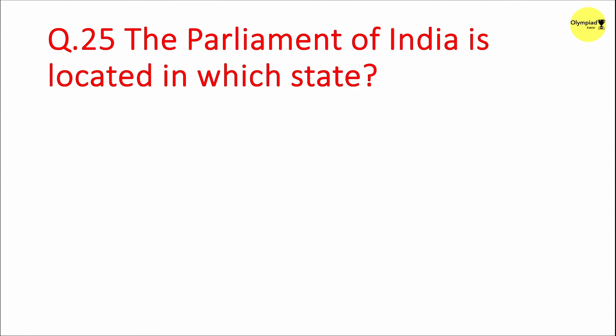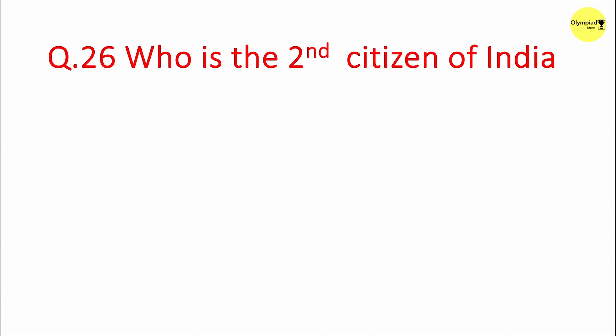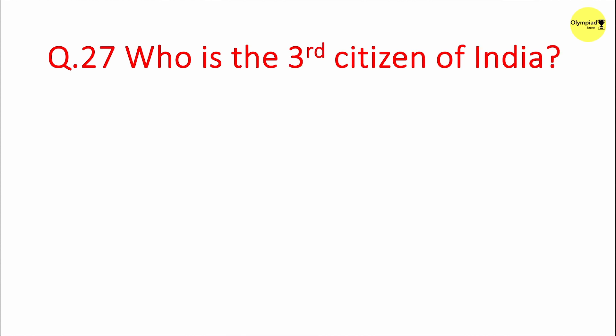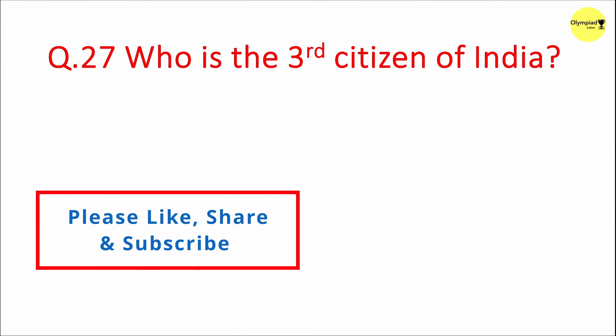Question 25: The Parliament of India is located in which state? Answer: Delhi. Question 26: Who is the second citizen of India? Answer: Vice President. Question 27: Who is the third citizen of India? Answer: Prime Minister.